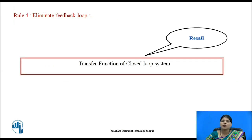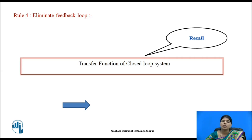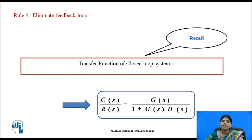Rule four is to eliminate the feedback loop. Before moving to rule four, recall the transfer function of a closed-loop system. Pause the video for a minute. The transfer function is output upon input, so C(s) / R(s) = G(s) / (1 ± G(s)·H(s)).